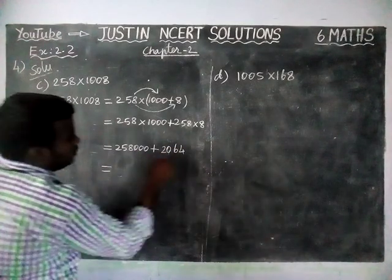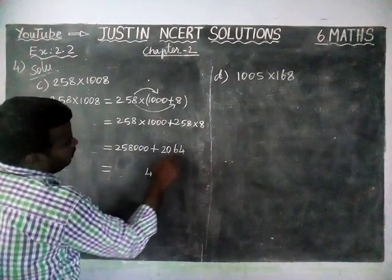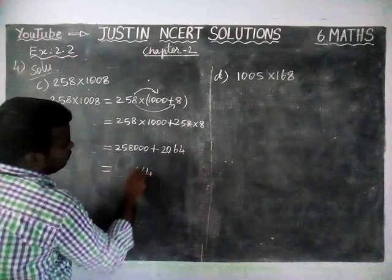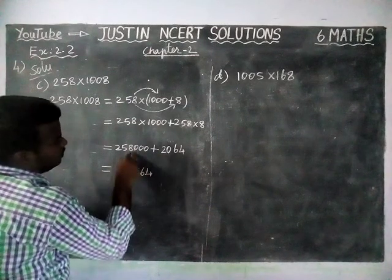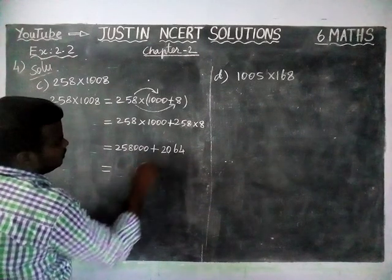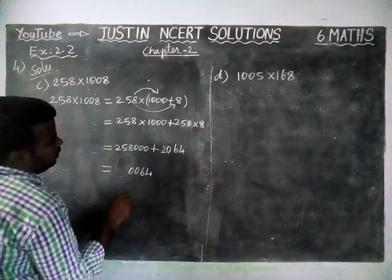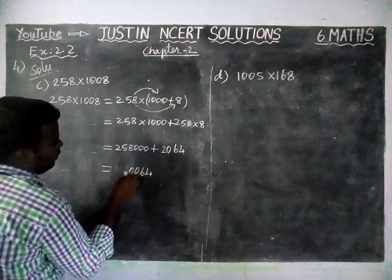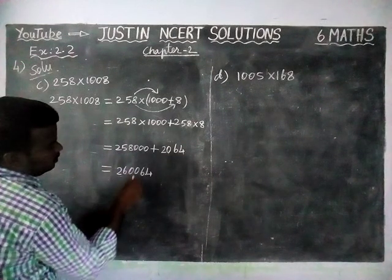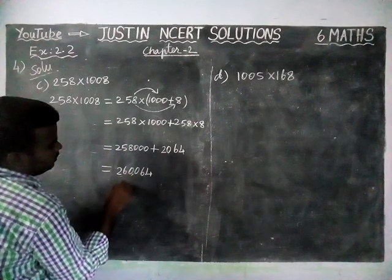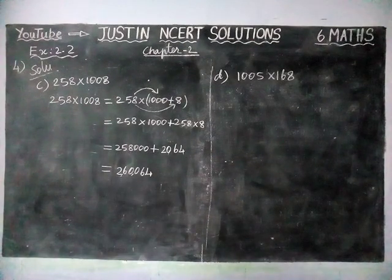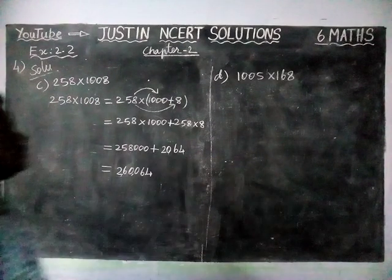Placing the digits: 1s place is 4, 10s place is 6, 100s place is 0, 1000s place is 10 — remaining 1 — so 10,000s place is 5, then 6. So the answer for Option C is 2,60,064.